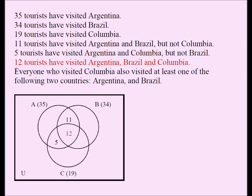12 tourists visited all three countries, so 12 goes in the center region belonging to all three circles. The last line is tricky: everyone who visited Colombia also visited at least one of Argentina or Brazil. That means no one visited only Colombia, so the region for Colombia only must be zero.